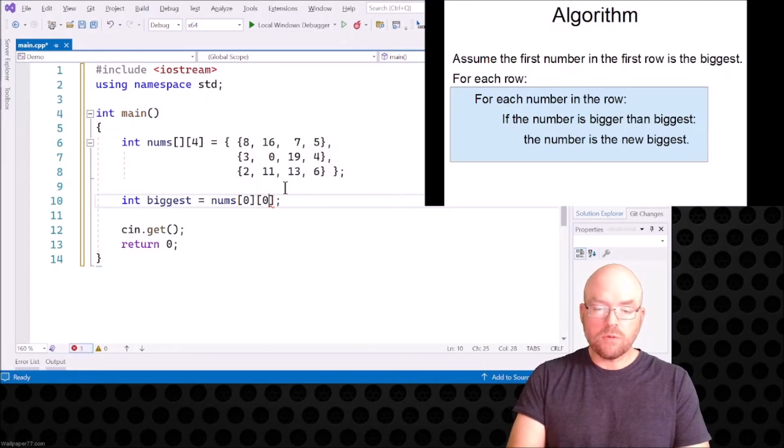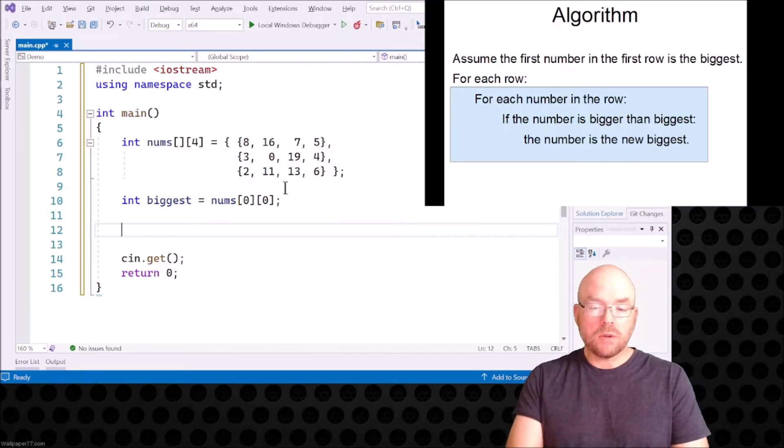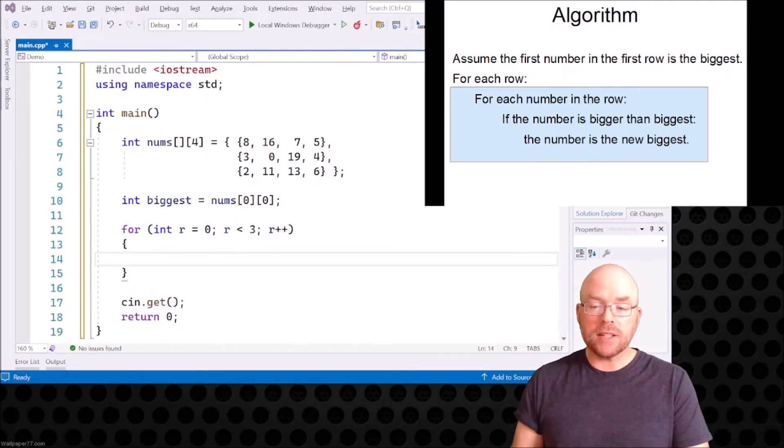Then what did we have to do? We had an outer loop that had to go through each row. So we'll say for int r equals zero, that's going to be the first row. So long as that row is less than the number of rows. Well, how many rows are there? There's three. Then we're going to do something. So that is the basis of our outer loop.